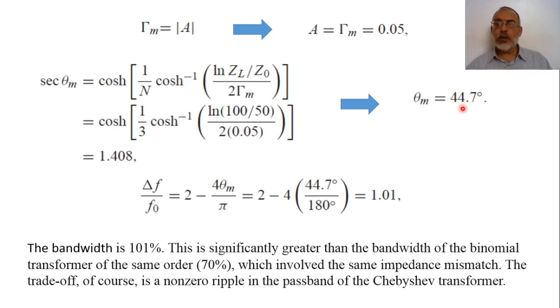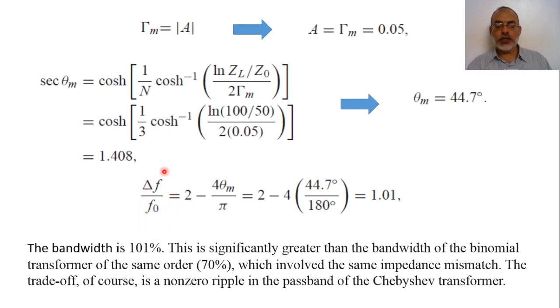By inverting it, cosh(θ_max) = 1/1.408, so θ_max = cosh^{-1}(1/1.408). From this, we obtain θ_max = 44.7 degrees. Now we know θ_max, and from it we can obtain the operating bandwidth of the proposed multi-section transformer.